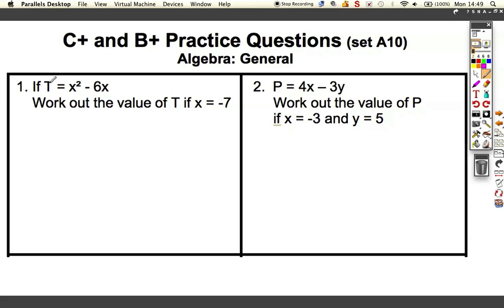In this question we're asked to work out the value of t, and we're given the expression x squared minus 6x, and we're told that x is equal to minus 7. Now we've got to be really careful, especially if we're using our scientific calculators on this.